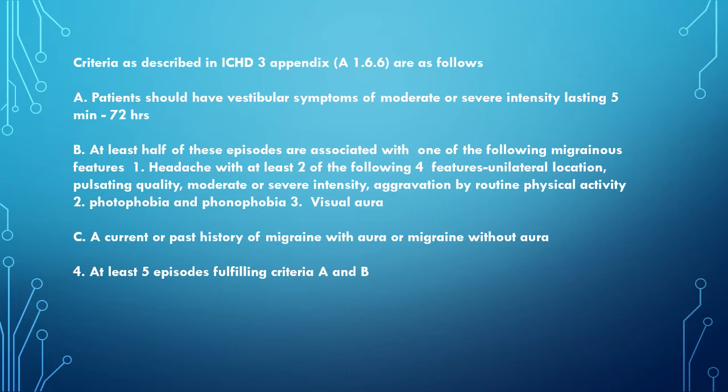Criterion A: patients should have vestibular symptoms of moderate or severe intensity lasting five minutes to 72 hours. Criterion B: at least half of these episodes should be accompanied by one of the following migraine features: number one, headache with at least two of the following four features — unilateral location, pulsating quality, moderate or severe intensity, aggravation by routine physical activity; number two, photophobia and phonophobia; and number three, visual aura.